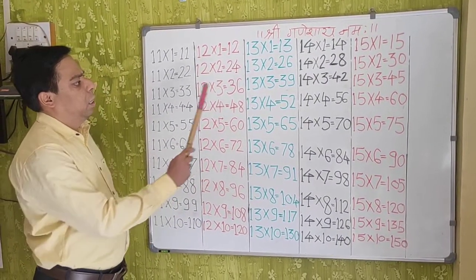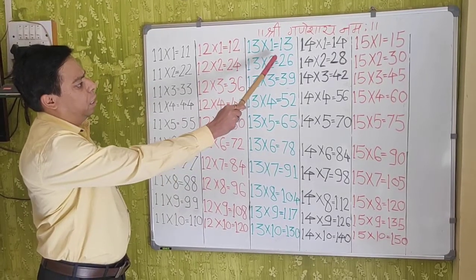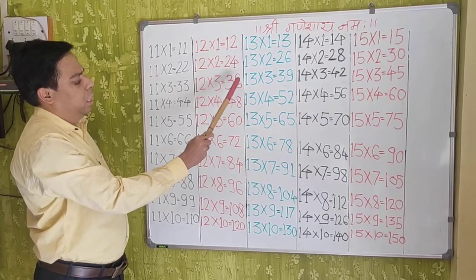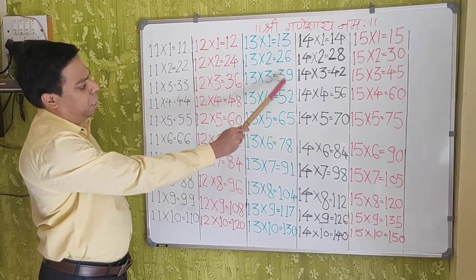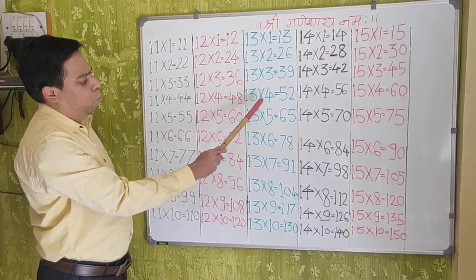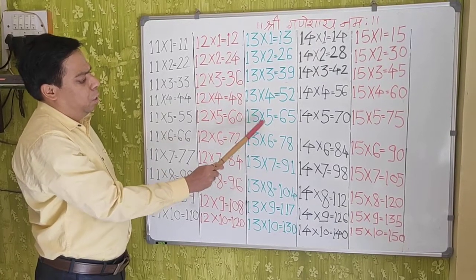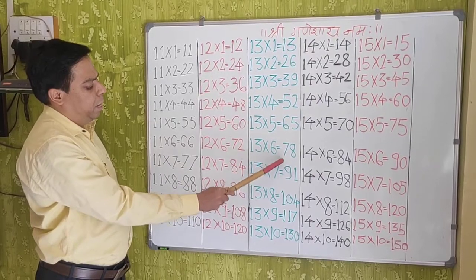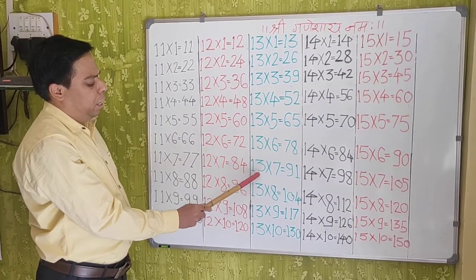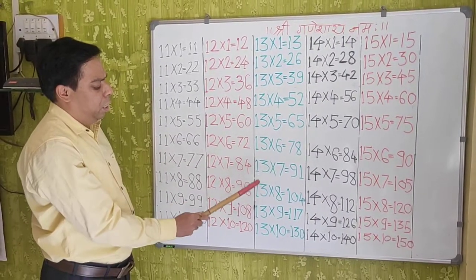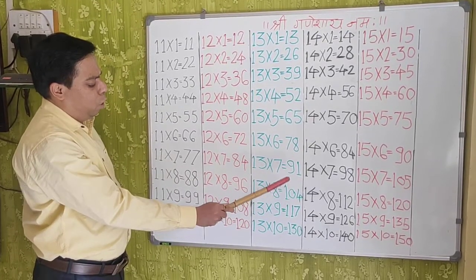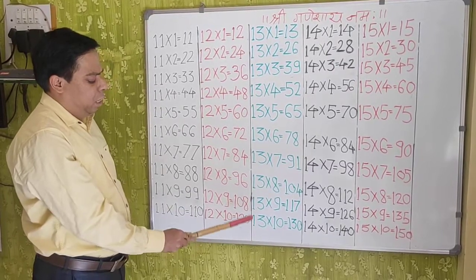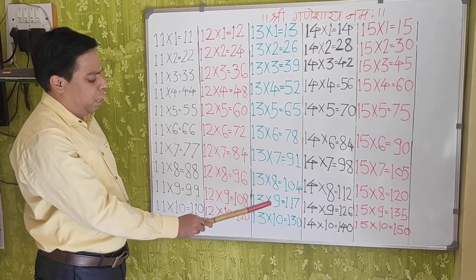Next table: 13×1=13, 13×2=26, 13×3=39, 13×4=52, 13×5=65, 13×6=78, 13×7=91, 13×8=104, 13×9=117, 13×10=130.